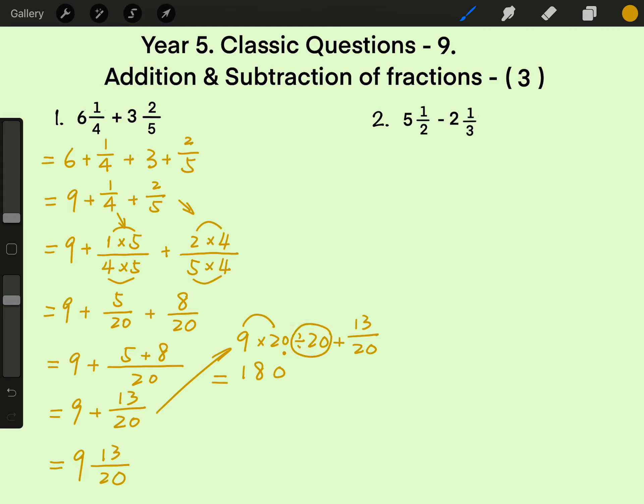Divided by 20 can be written as 180 over 20, and then plus 13 over 20.